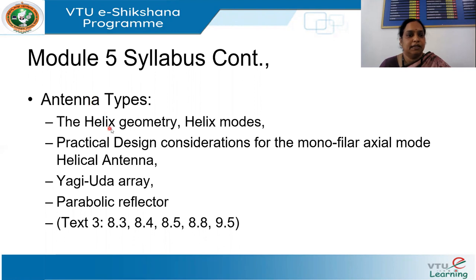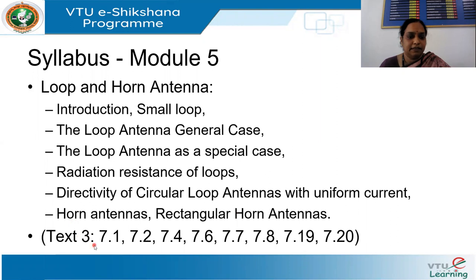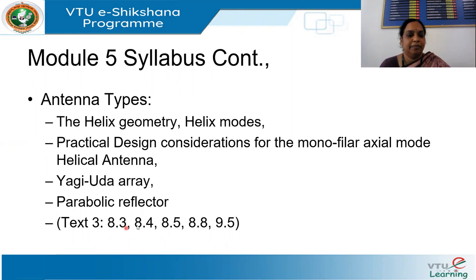The syllabus continues with antenna types in Chapter 8: helix geometry, different helix modes, practical design considerations for the monophilar axial mode helical antenna, the angular array, and the parabolic reflector. Material is from Text 3, Chapter 7 (sections 7.1, 7.2 and subsections), with 7.19 and 7.20 covering horn antennas, 8.3 to 8.5 covering helical antenna, 8.8 for arrays, and the last chapter on the parabolic reflector.